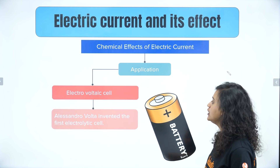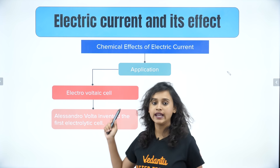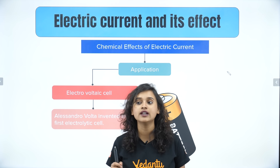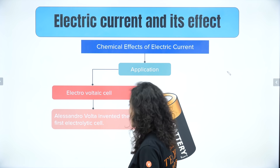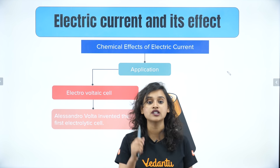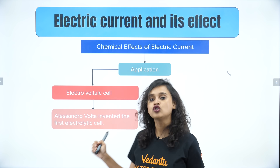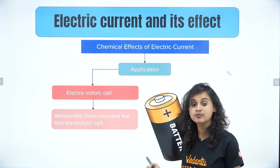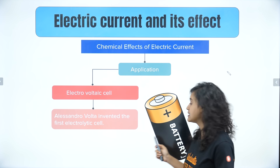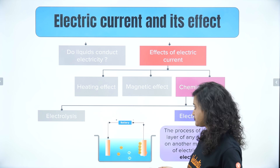Now we will learn about the electrovoltaic cell, which was invented by Alessandro Volta. This was the first electrolytic cell — inside this cell, a chemical reaction takes place, specifically an electrolysis reaction, which gives us the electrical power.